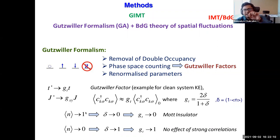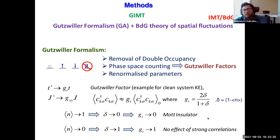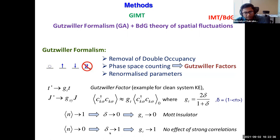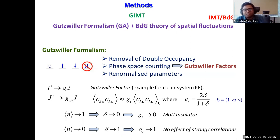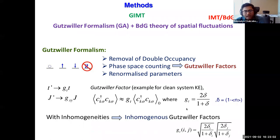In the extreme limit when all sites have one electron per site, average density is one, δ = 0, and g_t = 0 — so there is no hopping; it is a Mott insulator. In the other extreme where you are highly overdoped with effectively no electrons, δ → 1, g_t → 1 — the electrons effectively don't see each other, so strong correlations have minimal effect.